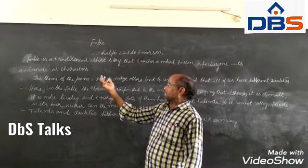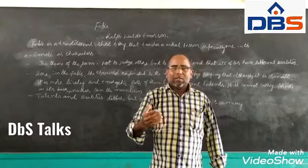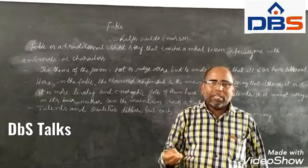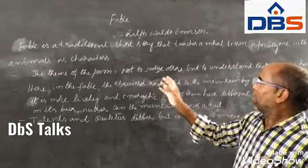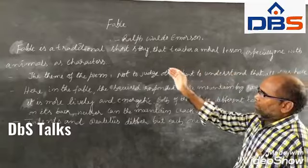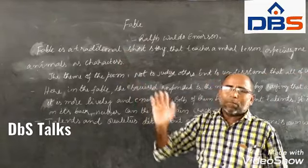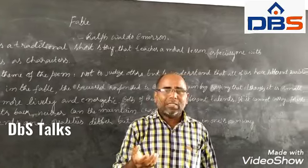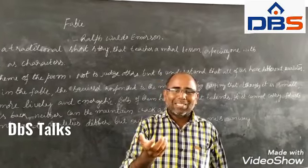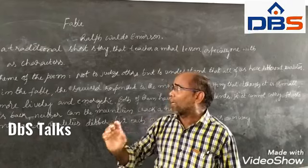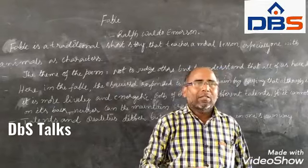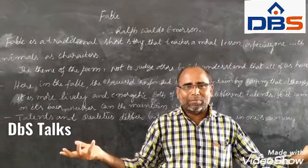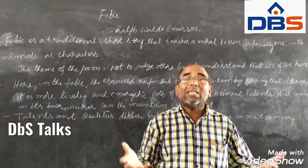After going through this Fable, you may get a doubt. If we consider this Fable as a traditional short story with animals as characters, you will see a mountain and a squirrel. Coming to the squirrel, you may think it belongs to an animal. But some students may get a doubt about the mountain. In that case, think about flora and fauna — there ends the matter.